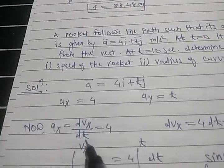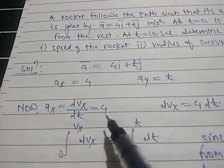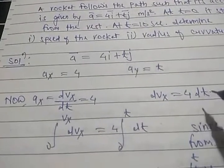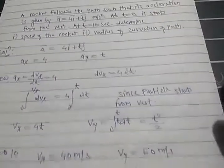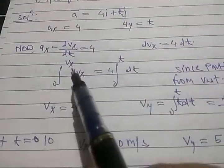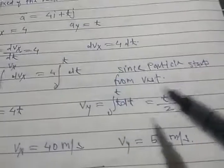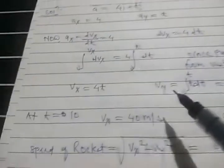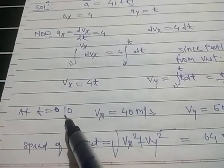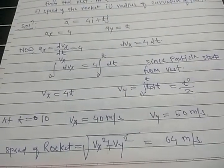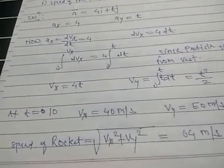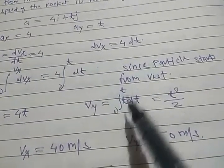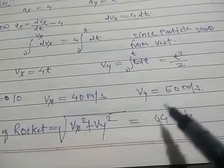Since ax equals dvx/dt, we have dvx/dt equals 4. Integrating from 0 to t gives vx equals 4t. Since the particle starts from rest, at t equals 10 seconds, vx equals 40 meters per second. Similarly, vy equals integral of t dt from 0 to t, which gives vy equals t²/2. At t equals 10, vy equals 50 meters per second.